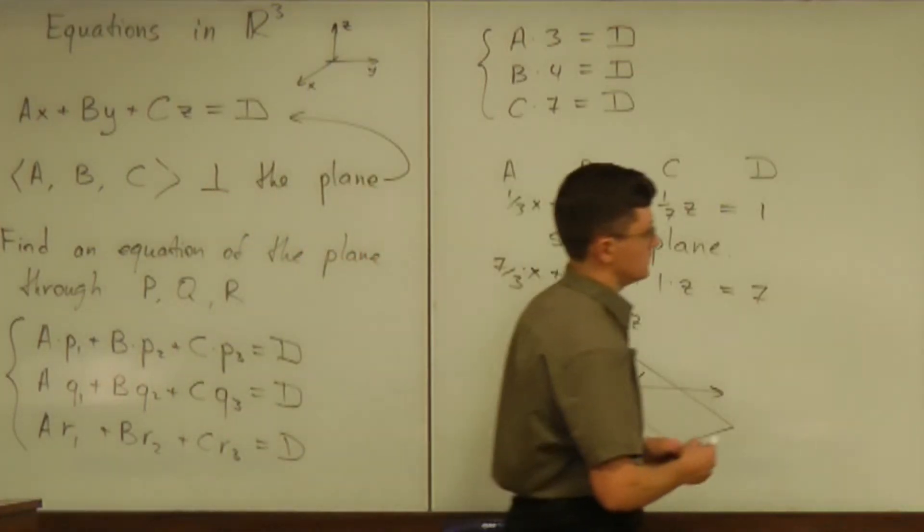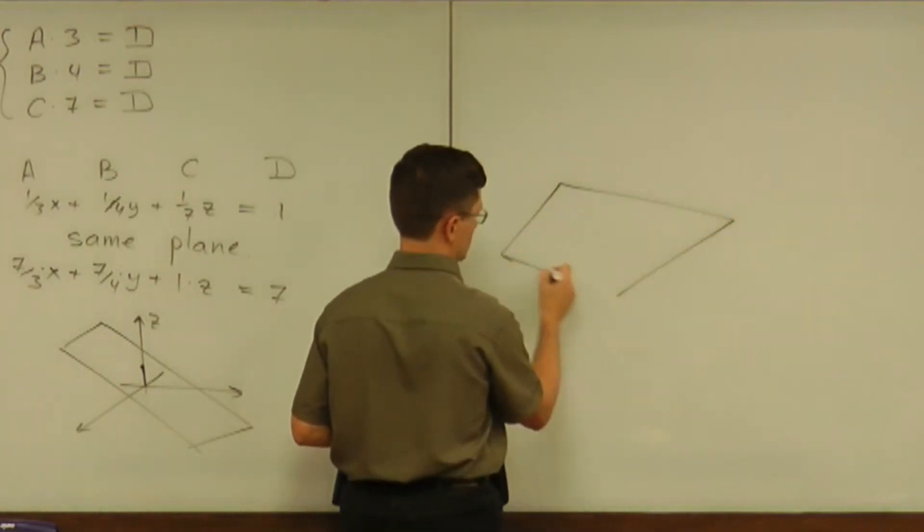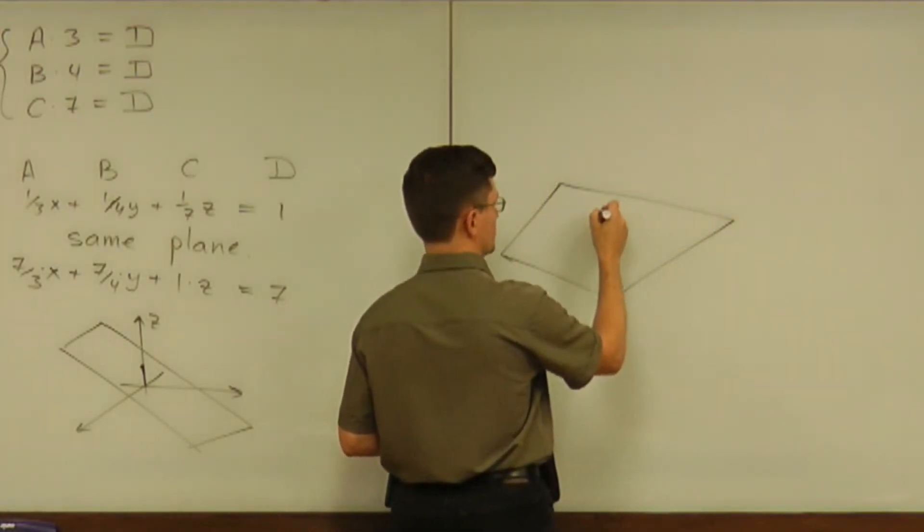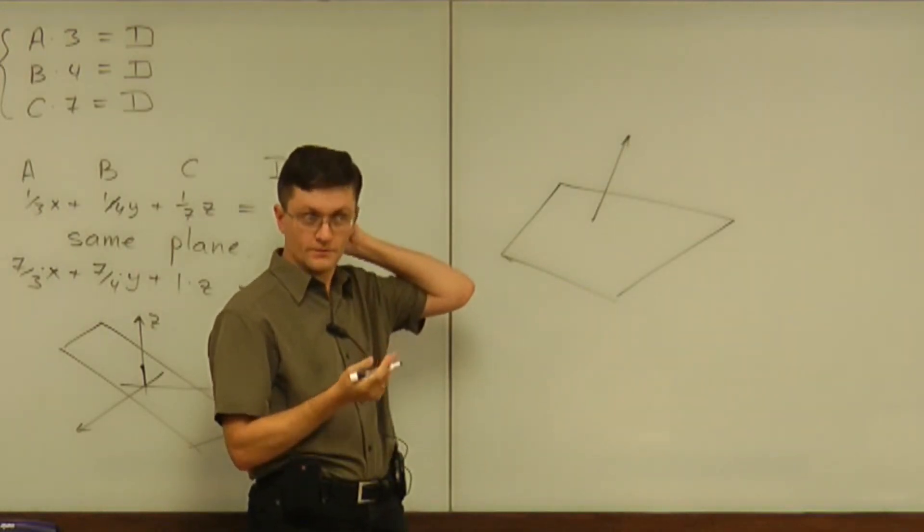Well, speaking of the question about finding a vector perpendicular to a plane, how many vectors are there? Well, infinitely many, right?